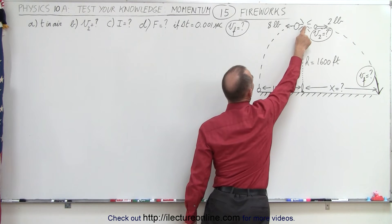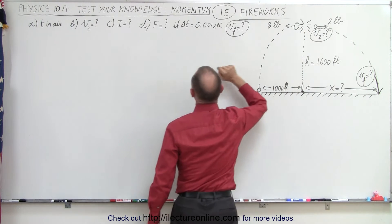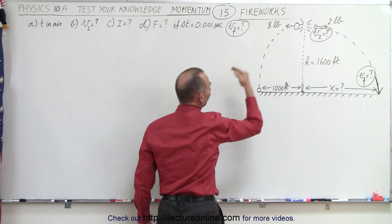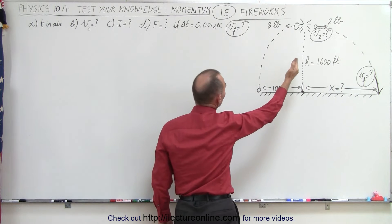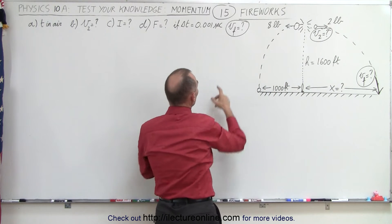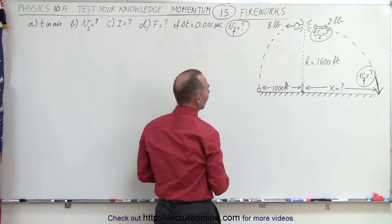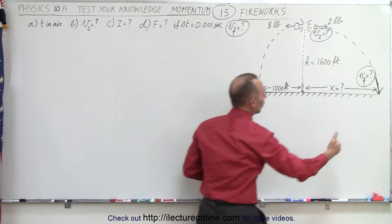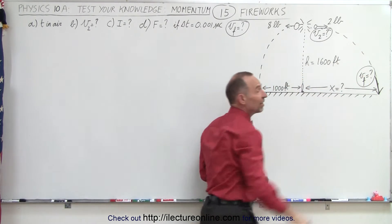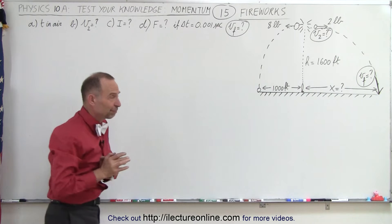C: What is the impulse on the two pieces? D: What is the force on the two pieces, assuming that the amount of time of the explosion is 0.001 second? And finally, E: what is the impact velocity of the small piece when it reaches back to the ground?